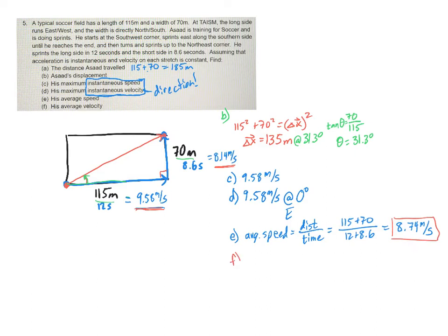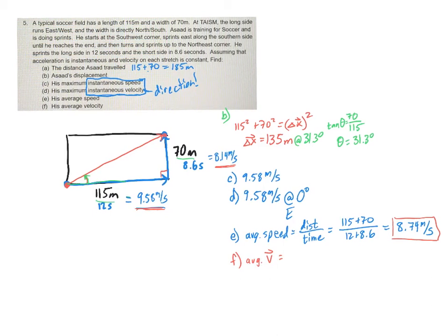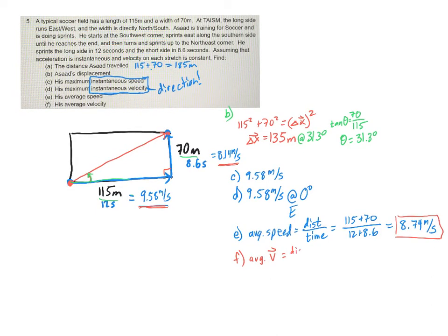All right? Now, the last question here is the average velocity. Okay? Now, velocity, remember, is a vector. So we should have magnitude and direction. So the magnitude of average velocity is the total displacement divided by the total time. So the displacement is that change in X. That's what we found in B, right? 135. So we go 135. And then we divide by the time, which we found in the last question. It was that 20.6.